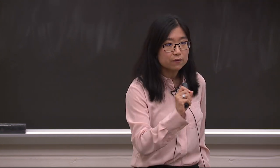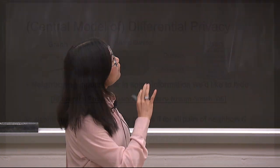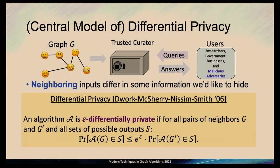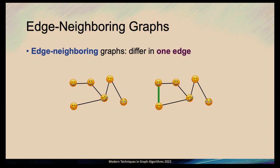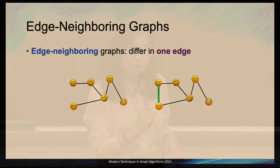The formal definition of privacy we're using is the central model of differential privacy, generally known as the gold standard within the theory community. Intuitively, a randomized algorithm is epsilon differentially private if for neighboring inputs it outputs the same output with approximately equal probability. This definition is parameterized by epsilon: the smaller the epsilon, the smaller the difference between the probabilities. Specifically for this talk, neighboring inputs are edge-neighboring graphs — graphs that differ in exactly one edge — so we're protecting the privacy of any one edge in the graph.